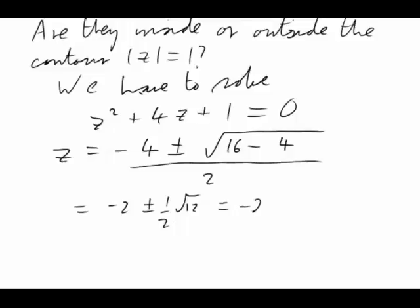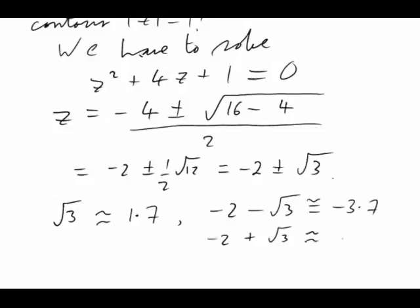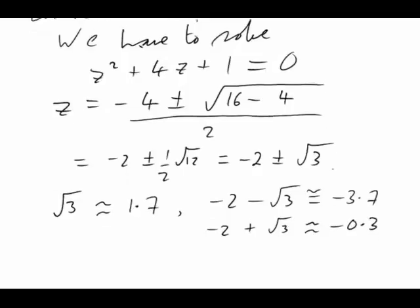That simplifies to negative 2 plus or minus root of 3. So my next question is, is either of those poles inside the unit circle? We need some idea of their magnitude. Root 3 is very roughly 1.7. It's not exact, but it's good enough. That means that negative 2 subtract root 3 is approximately negative 3.7. But negative 2 plus root 3 is approximately negative 0.3.